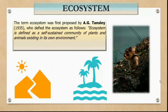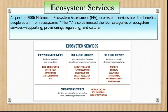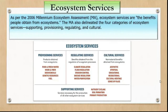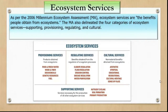Now, what does the ecosystem provide us? In layman's terms, these are the benefits that people obtain from an ecosystem — either tangible or intangible. The Millennium Ecosystem Assessment has categorized ecosystem services into four major categories: provisioning services, regulating services, cultural services, and supporting services.